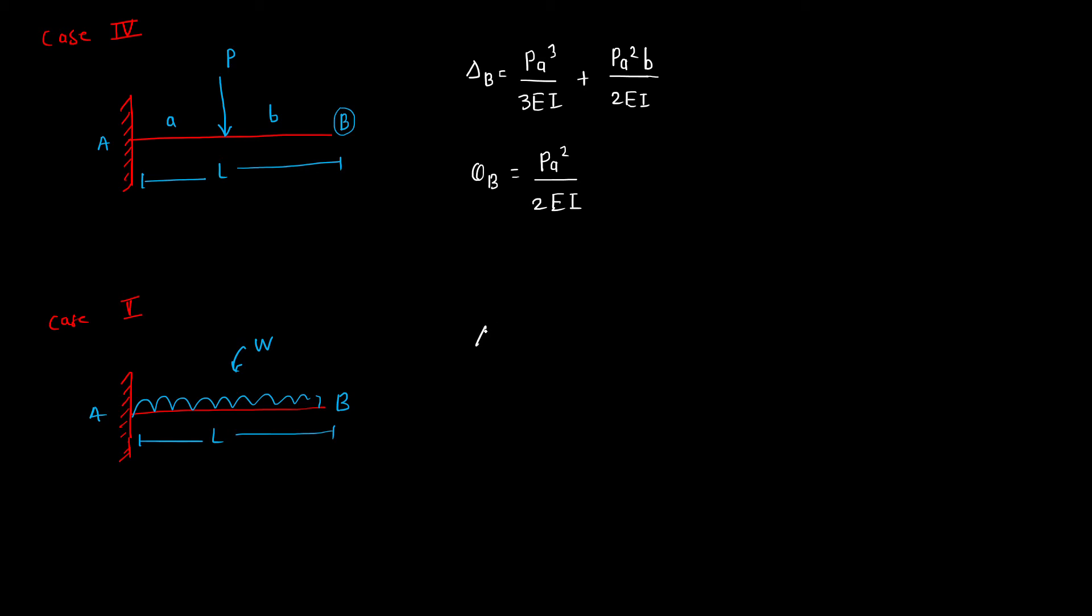The deflection at point B equals WL⁴/8EI, and the slope at point B equals WL³/6EI.